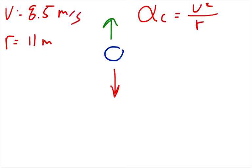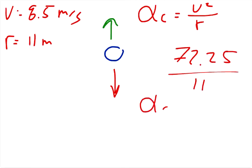And we can plug that in and find our centripetal acceleration. So 8.5 squared is 72.25. Divide that by 11. And that equals, the centripetal acceleration equals 6.57 meters per second squared.